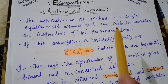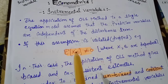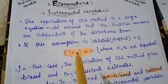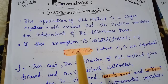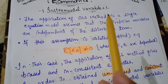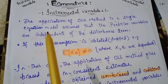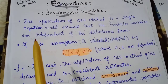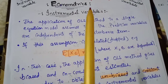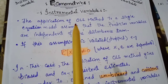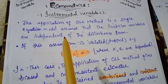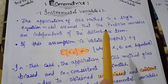The error term, written as epsilon or E, is the disturbance term. In the OLS method, we assume that the predictor variables do not depend on this disturbance term.